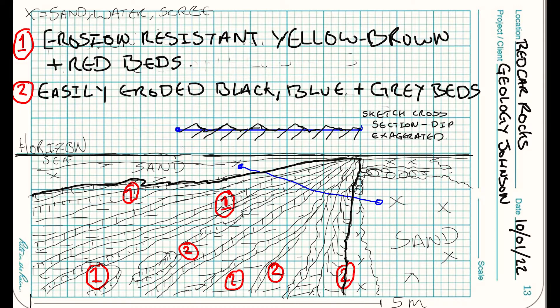The most important features I've identified here are that there are at least two types of rock in the outcrop. Rock type one is yellow, brown or red and it's resistant to erosion. Rock type two is black, grey or blue-grey and is less resistant to erosion — that's why we've got this kind of step-like shape. I've also done a little sketch trying to show what I think this outcrop would look like in cross section. I've exaggerated the dip on this sketch to make it easier to see.